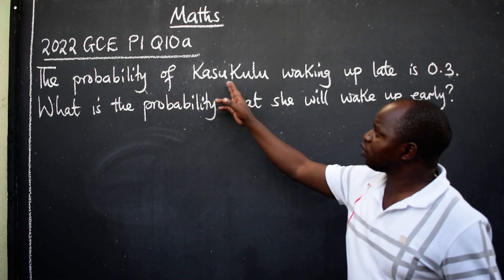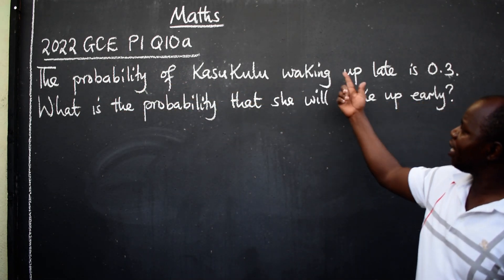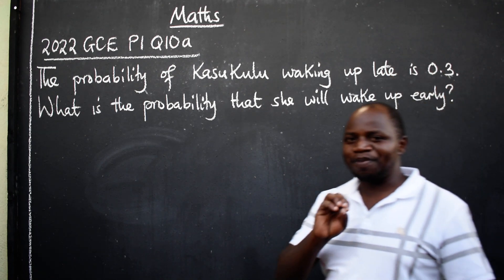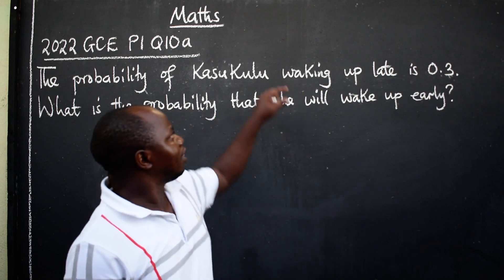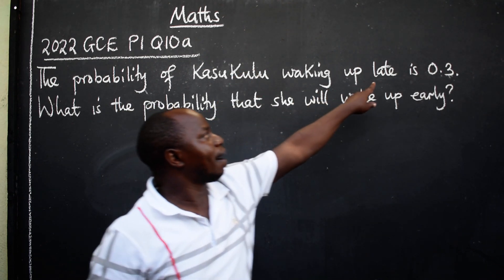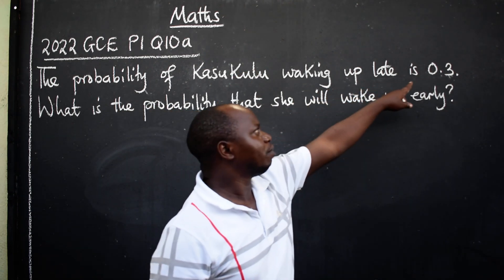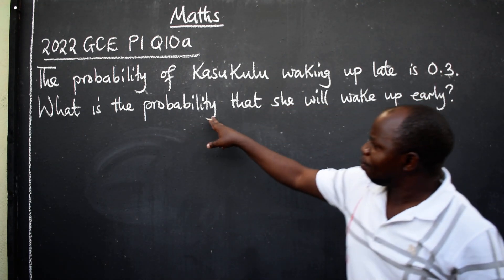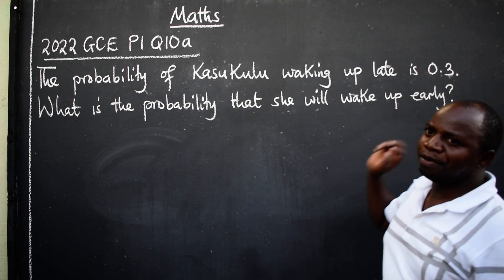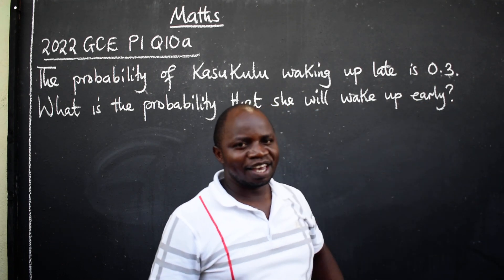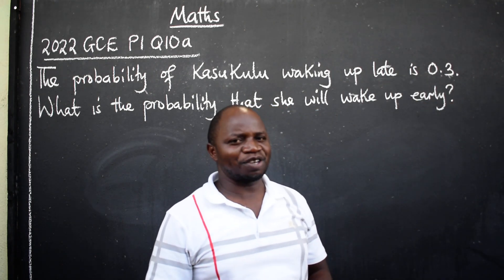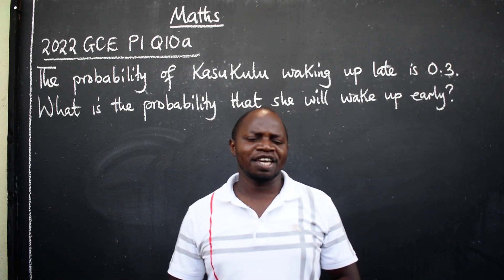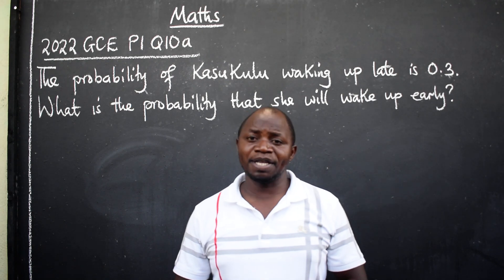The probability of Kasukulu waking up late is 0.3. We have been given the probability that this person will wake up late: 0.3. Now the question is, what is the probability that she will wake up early? This question comes from the topic in mathematics called probability.